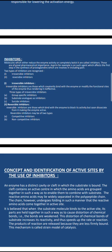Two types of inhibitors are recognized: reversible inhibitors and irreversible inhibitors. Irreversible inhibitors are those which covalently bind with the enzyme or modify the functional sites of the enzyme, thus rendering it ineffective. Three types of irreversible inhibitors are: (a) group-specific inhibitors, (b) substrate-analogous inhibitors, and (c) suicide inhibitors.